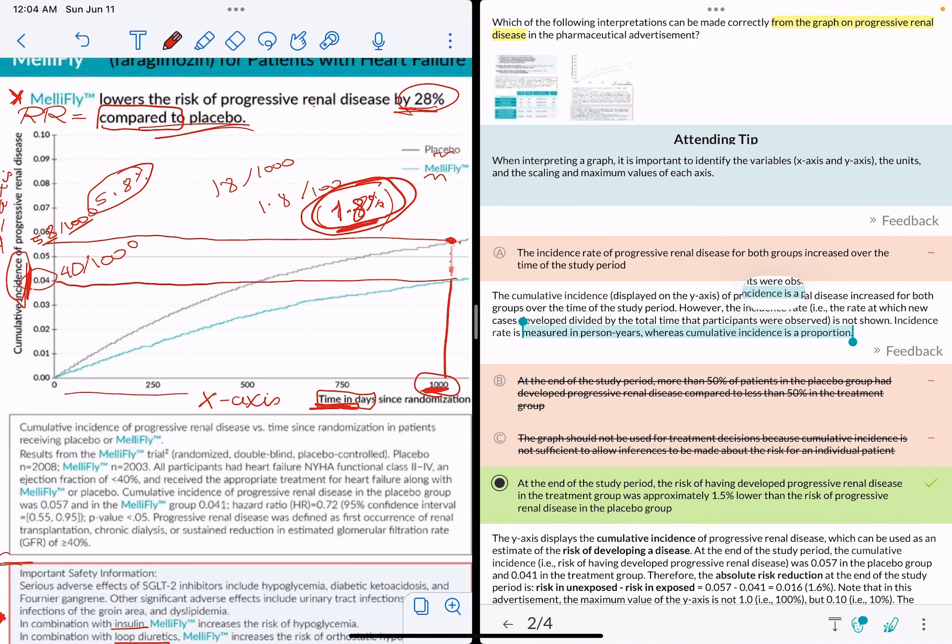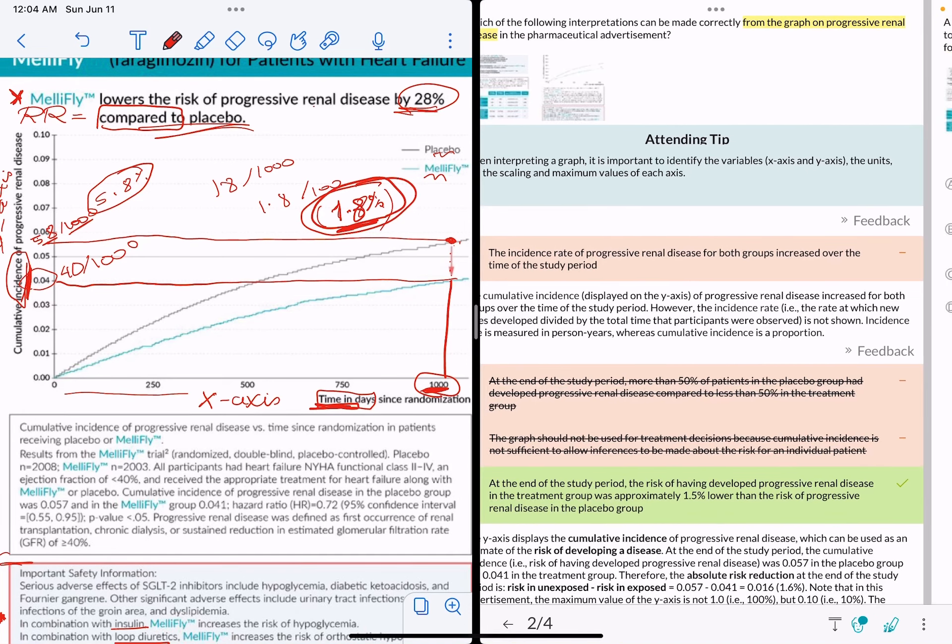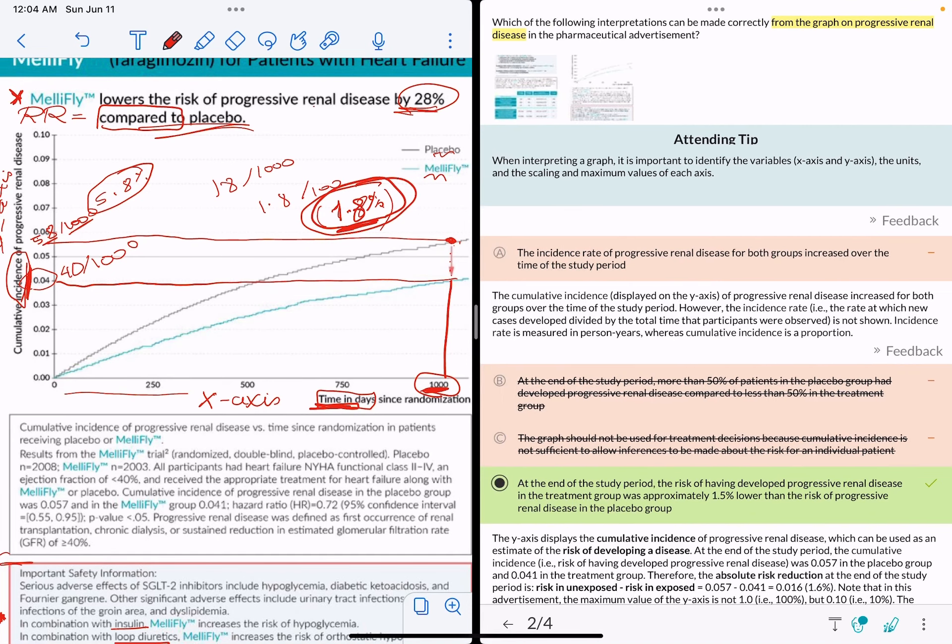Because the incidence rate is not the same as cumulative incidence. Incidence rate here mentions that it's measured in person-years, whereas cumulative incidence is a proportion. So yeah, it's not the incidence rate. That's what's wrong about answer choice A.